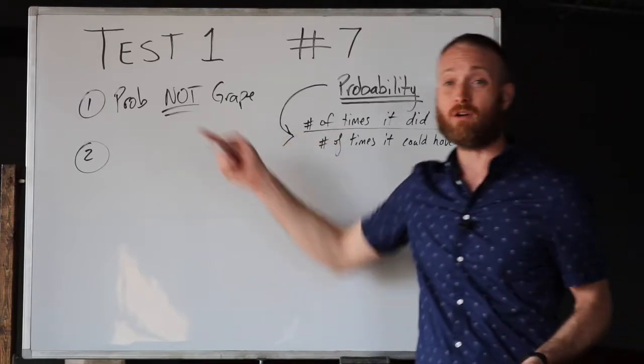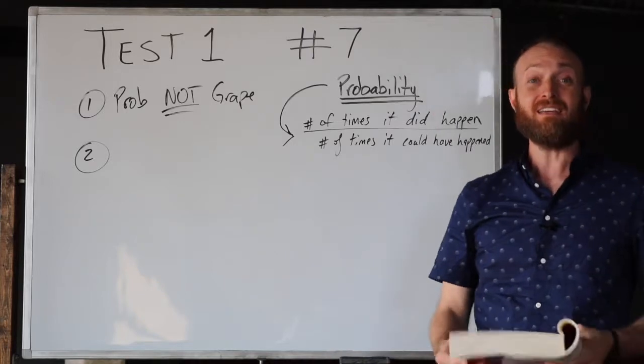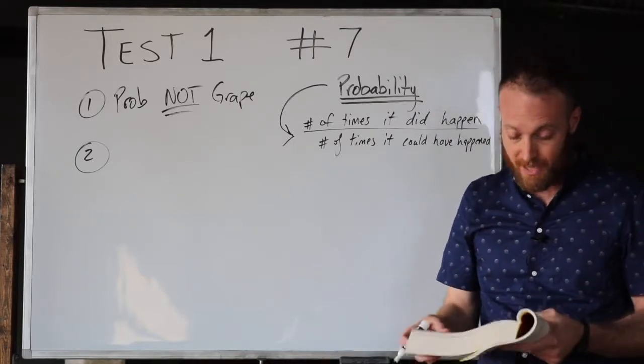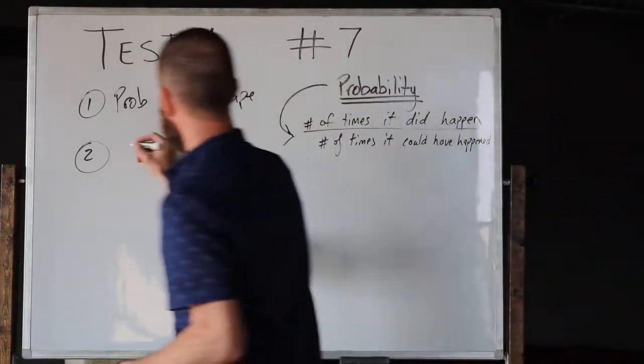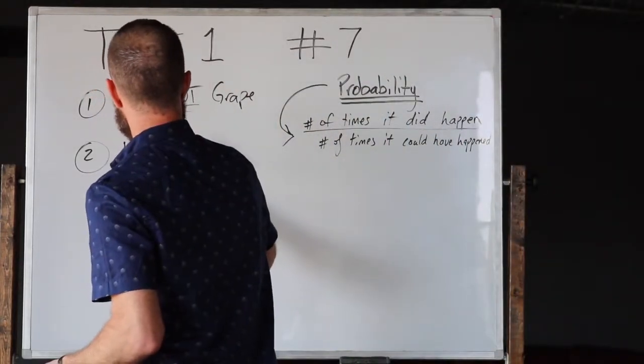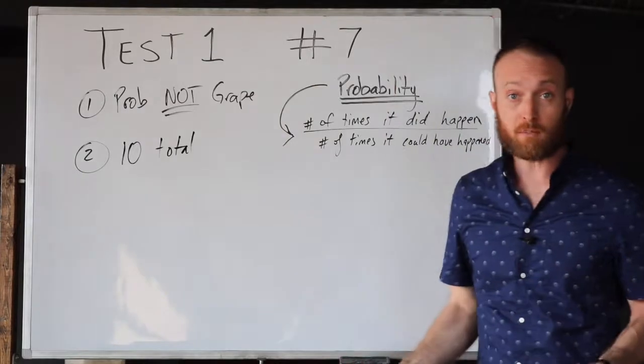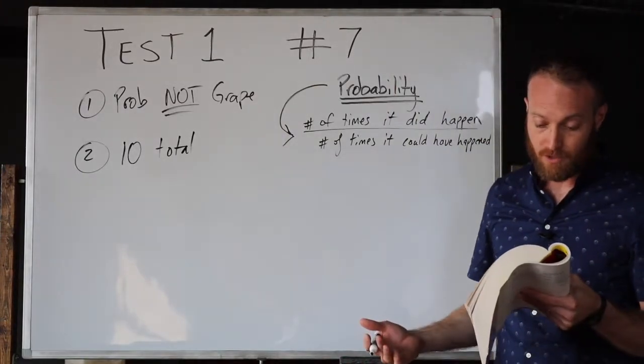The next thing we look at in our word problem strategy is: what do I know? I know several things. There are ten pieces of candy total. Knowing the total is really important.